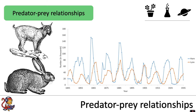We're going to look at one predator-prey relationship which is between a hare and a lynx. Over many years we have data on the number in thousands of our prey species, the hare, and the predator species, the lynx, which is what is going to be catching and eating the hare.